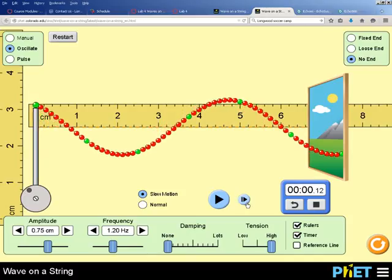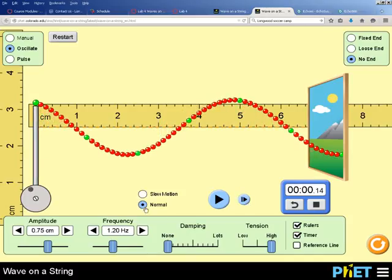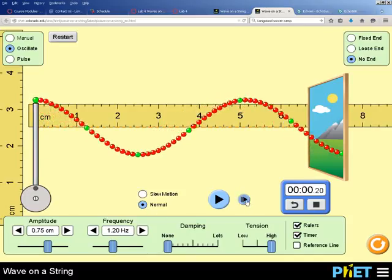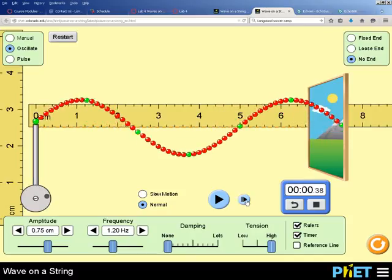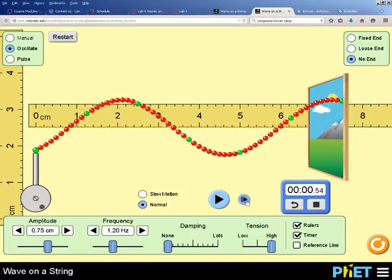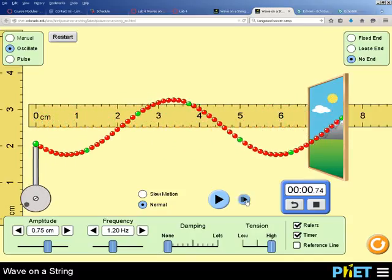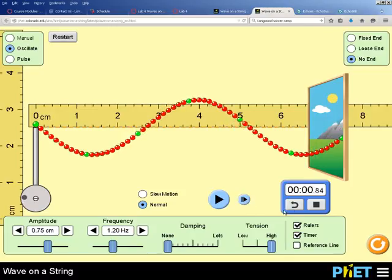So I want to go all the way up. I'm going to do normal so it'll go a little faster. All the way up, all the way back down, and then coming back to where we started. I went a little bit far. So my time here for the period would be about 0.84 seconds. And that's how you would measure the period.